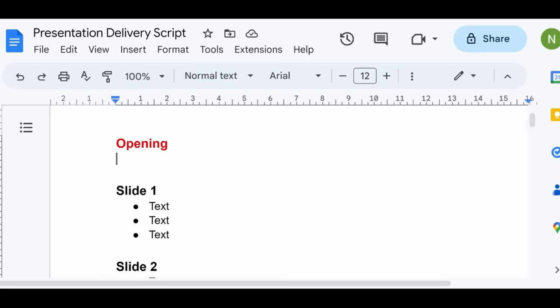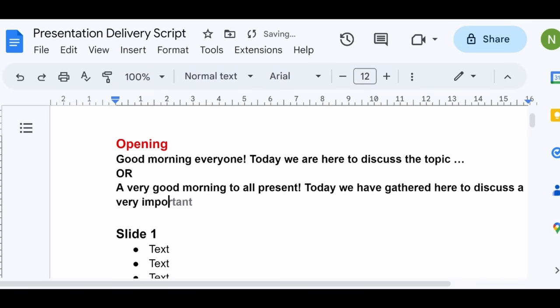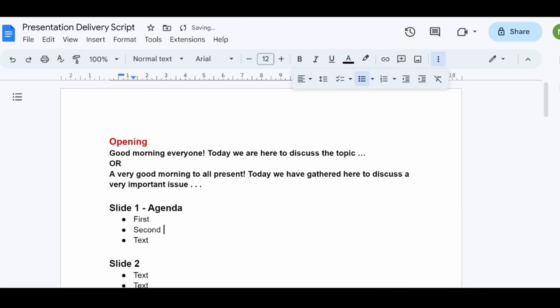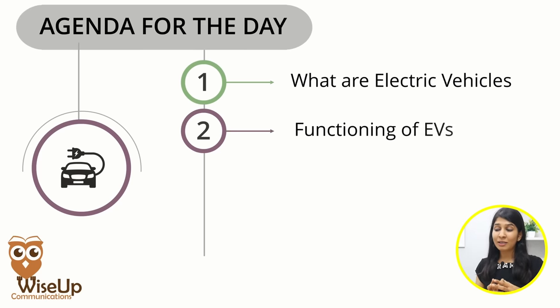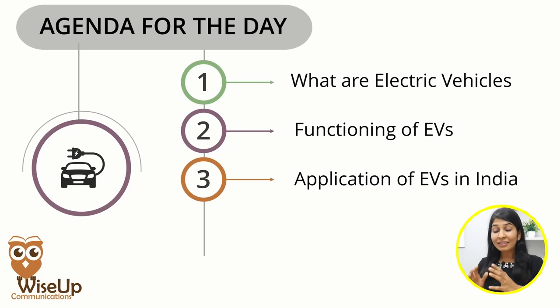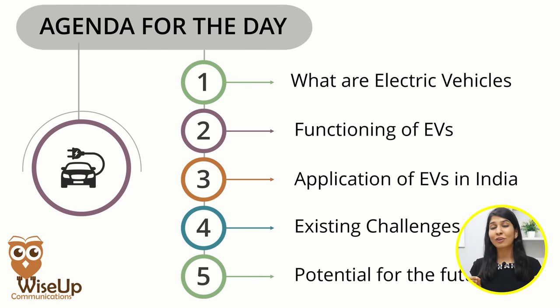You can open your presentation by saying, 'Good morning everyone, today we are here to discuss a topic,' or 'Good morning to all present, today we are gathered to discuss a very important issue.' After the opening, share the agenda — explain step by step what you're going to cover. For example: 'First, I'm going to introduce electric vehicles, then share information on their functioning and applications in India, then discuss existing challenges, and finally, the potential of electric vehicles for the future.' In a short and concise manner, you've shared the entire agenda.